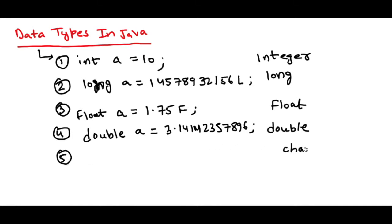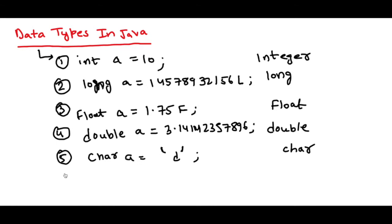The next data type is character, which is char. Character or char data type is used to store a single alphabet. If you want to store any alphabet from A to Z, for example the letter D, you can store it in variable A which is of type char. The syntax is a little different from numbers — for character, you will have to use single quotes and within the single quotes specify your character. So char A = 'D' stores the D character in variable A.